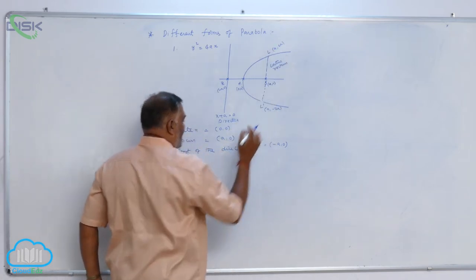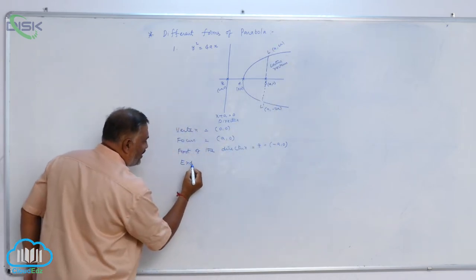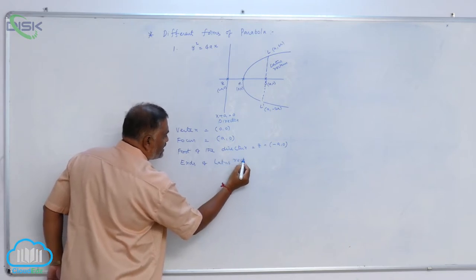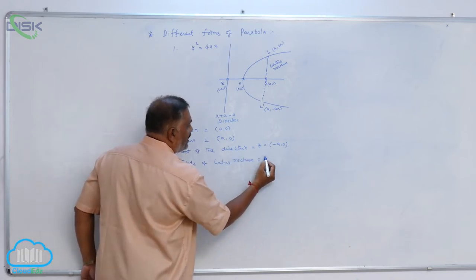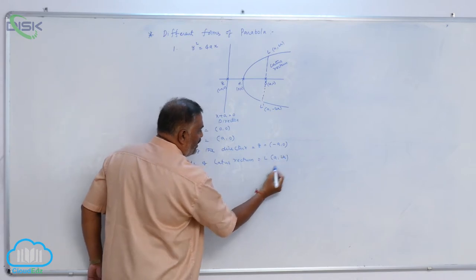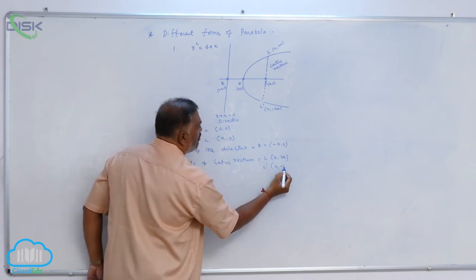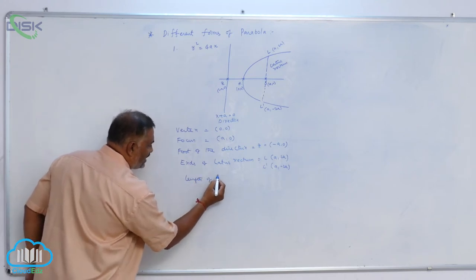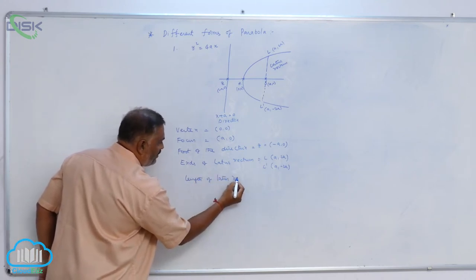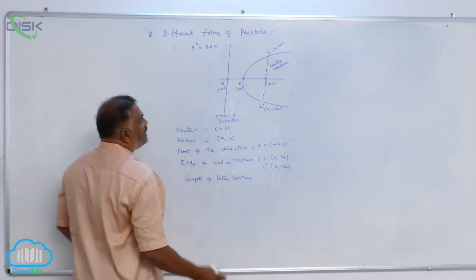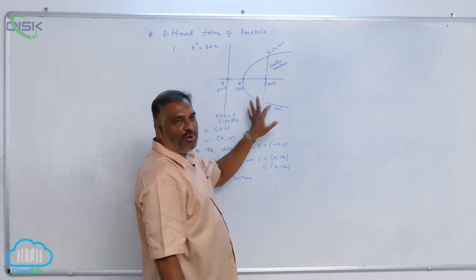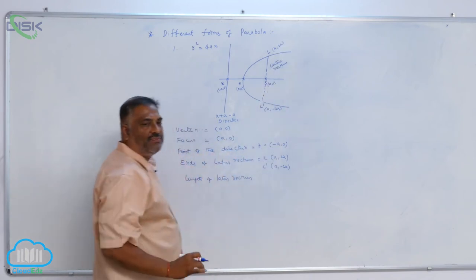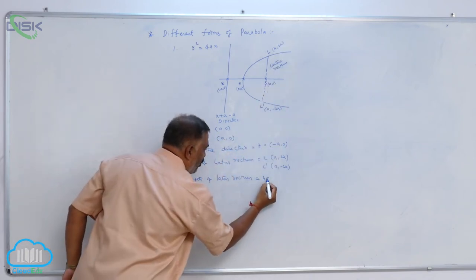Now L and L dash, ends of Latus Rectum are: L is a, 2a; L dash is a, minus 2a. Now, length of Latus Rectum—that means distance between these two points—a minus a is zero, 2a plus 2a is 4a. That is 4a units.